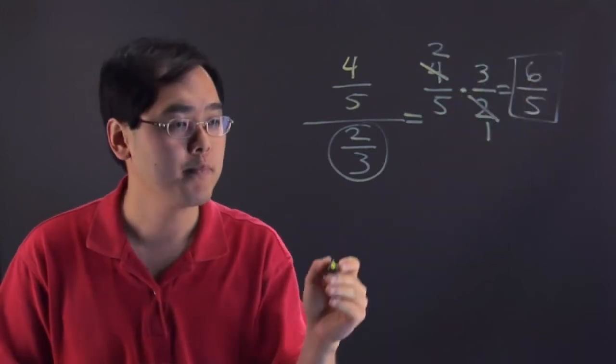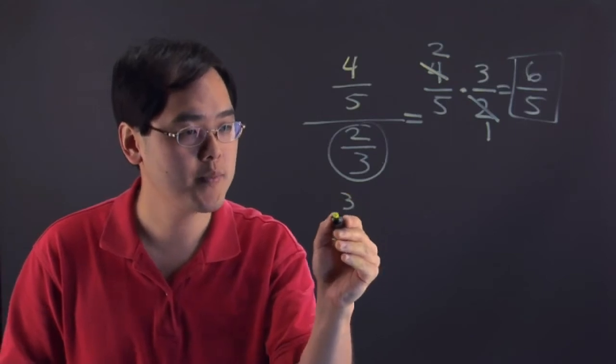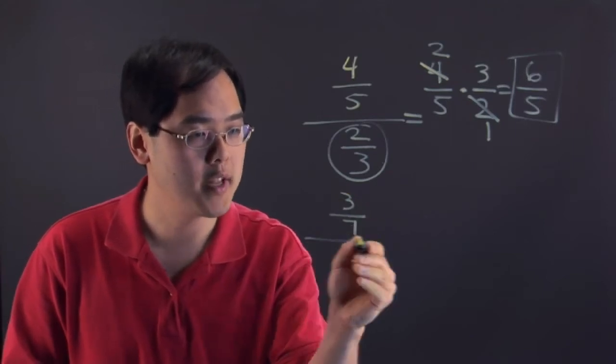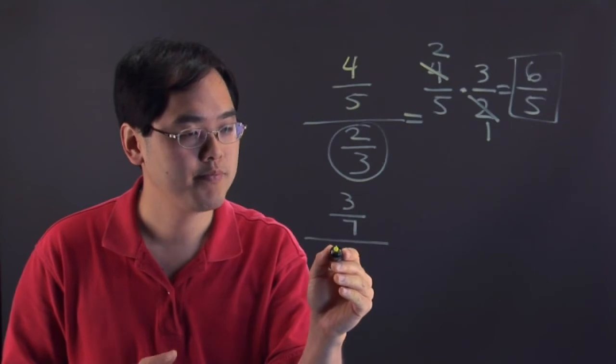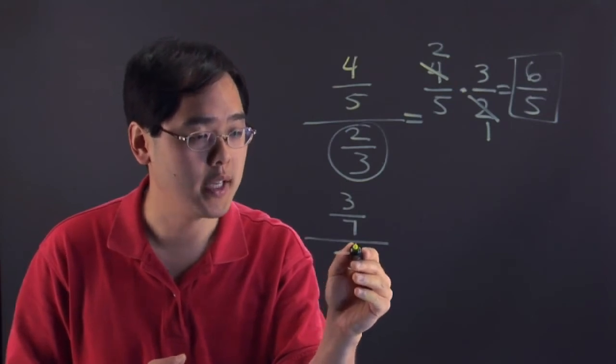Now let's do another quick example for you. Suppose you have 3 sevenths and you're dividing by negative 2.